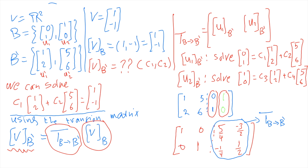We now multiply T by V_B = (1, −1) to find V_{B'}. Computing: first component is 5/4 + 3/2 = 11/4, second component is −1/4 − 1/2 = −3/4. So the coordinate vector of V with respect to B' is (11/4, −3/4).